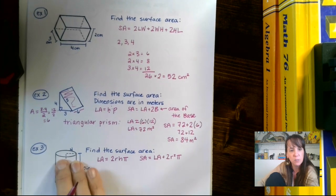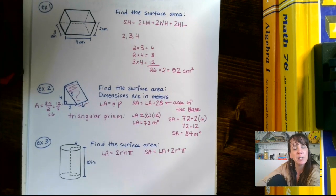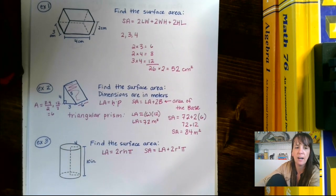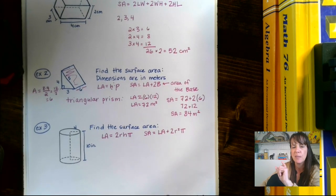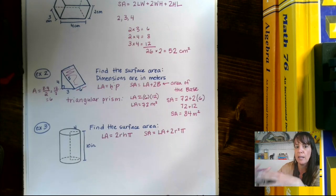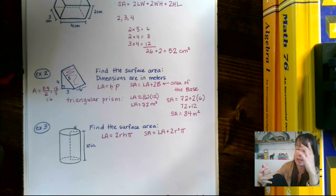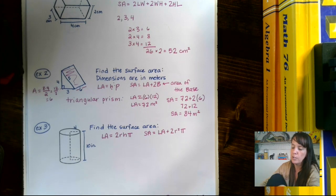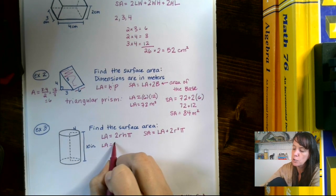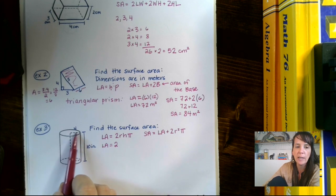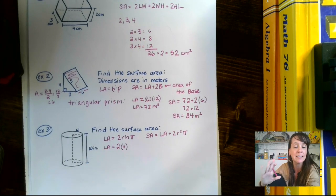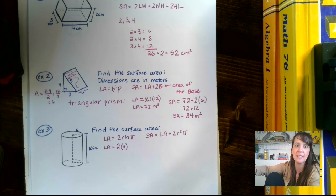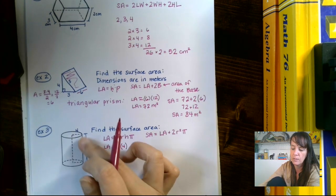The next shape is a circular prism, which we call a cylinder, because the non-rectangle parts are the circles. Here's how we find the surface area. First, we find the lateral area. The best way to think about this is a soup can — the label on the can would be your lateral area. We take 2 times the radius times the height, then multiply by pi. Remember, the height is what connects the two circles.